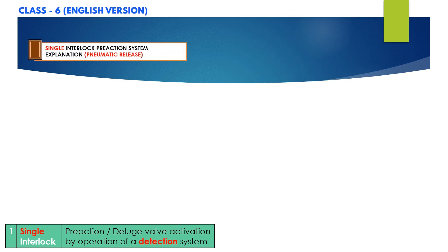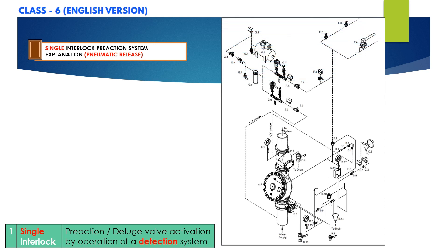Now let's discuss the pneumatic release type single interlock pre-action system. The concept is the same as the electric release type. In electric release systems, there is a dedicated releasing control panel with a compatible detection system — once the detector activates, it signals the panel, energizing the normally closed solenoid valve to open, releasing water from the priming chamber to drain, and allowing water to flow through the deluge valve to the complete system piping. Upon activation of sprinklers, water flows out of the piping network. However, in pneumatic release type systems, there is no releasing control panel or smoke or heat detectors.